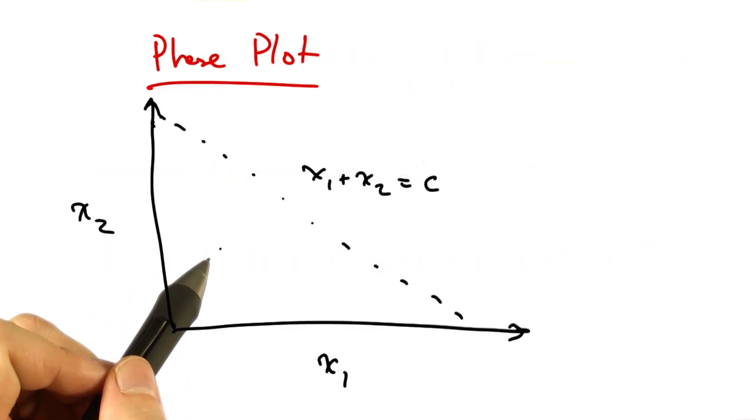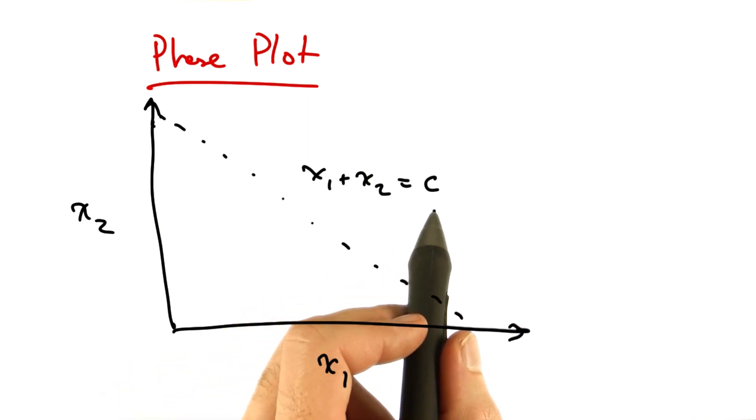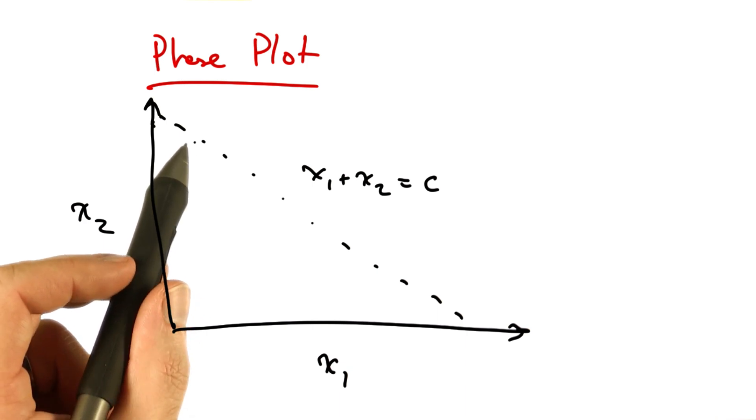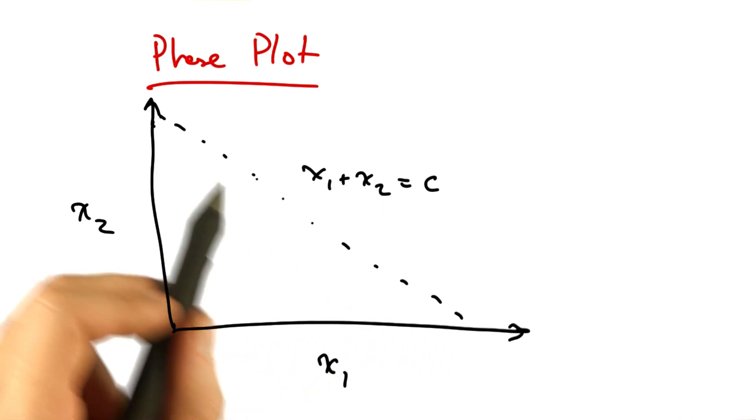We can represent fairness and efficiency in terms of a phase plot, where each axis represents a particular sender's allocation. In this case, we just have two users, one and two, and we represent their allocations with x1 and x2. If the capacity of the network is c, then we can represent the optimal operating line as x1 plus x2 being some constant c.